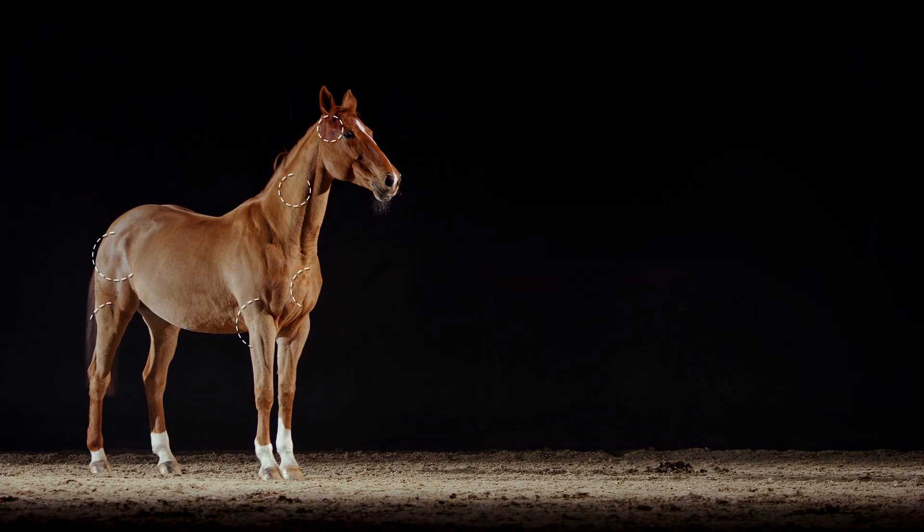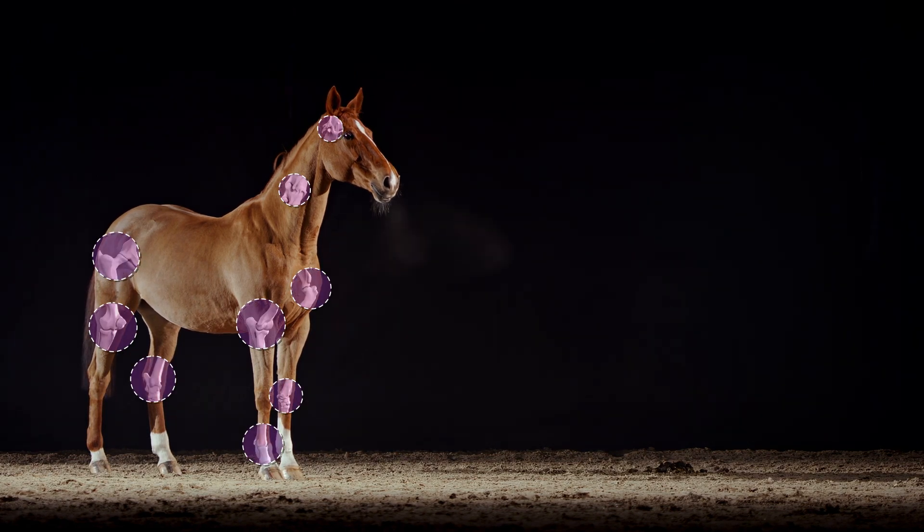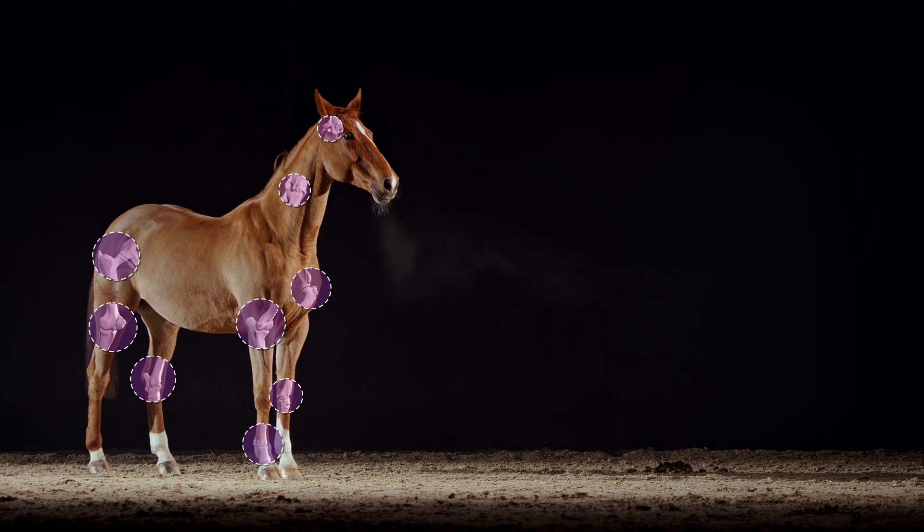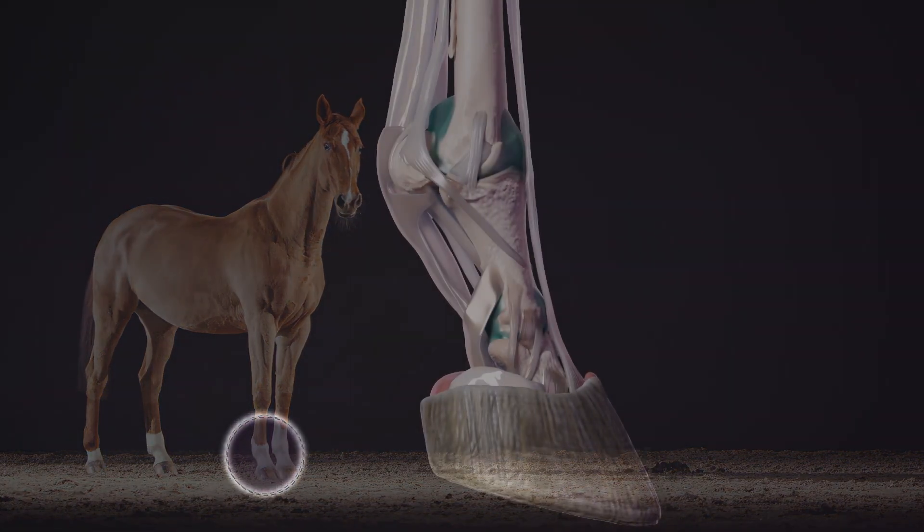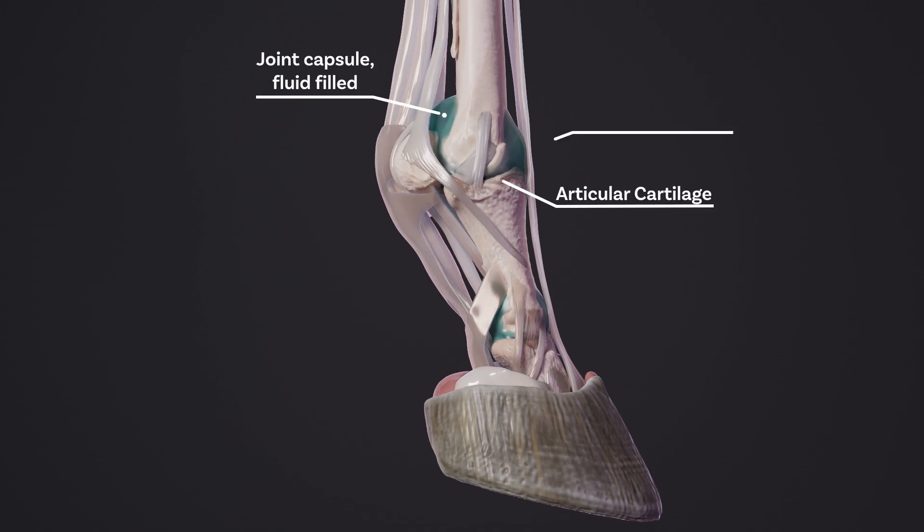Most joints in the horse's body, such as the ones identified in this horse, are synovial joints. These joints allow for different degrees of movement depending upon the shape of the joint and the surrounding tendons and ligaments.